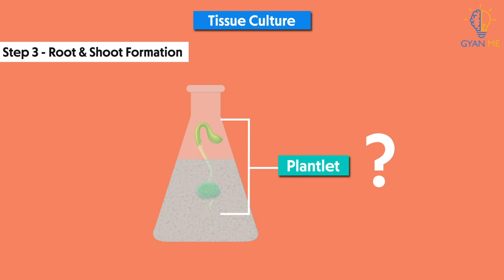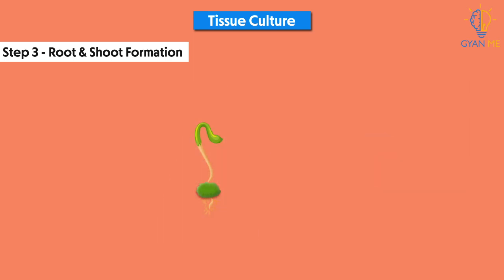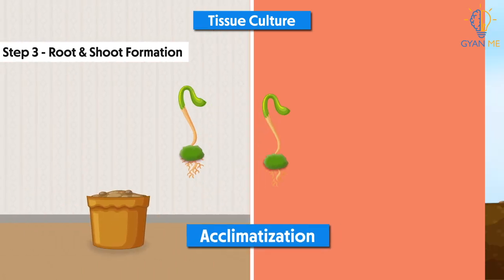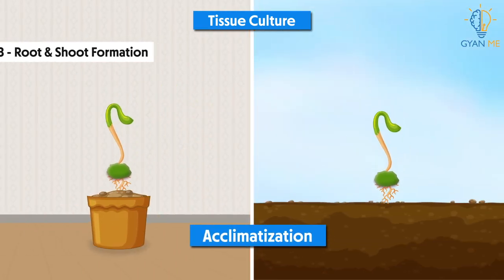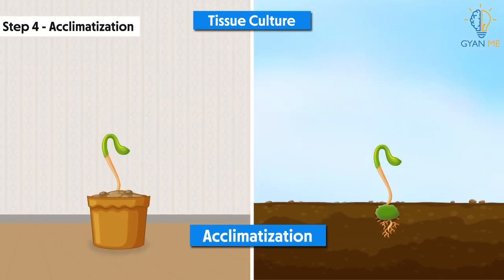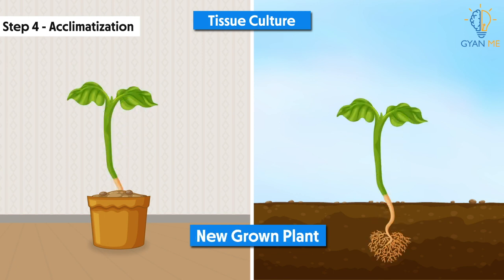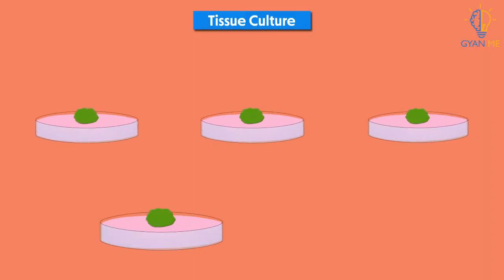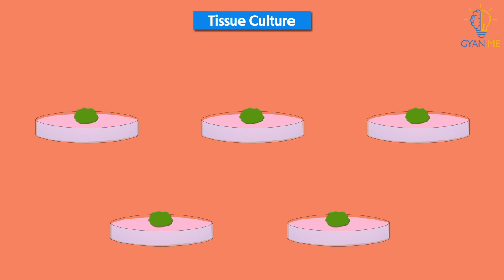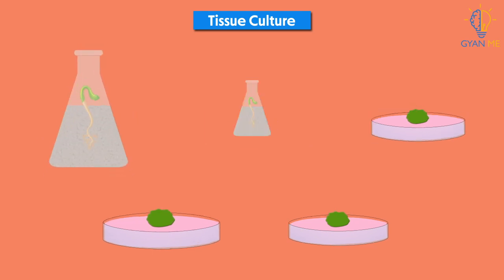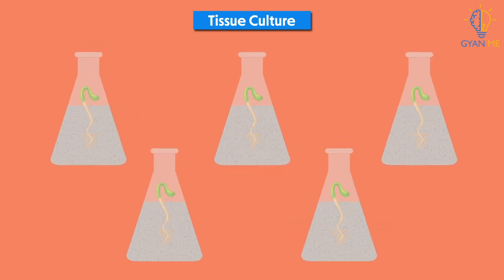These plantlets are then transplanted into pots or into the ground with soil, where they can grow into adult plants. The last step is called acclimatization. Thus, from a few initial plant cells or tissue, many miniature plantlets are created, which then grow up into new individual plants.